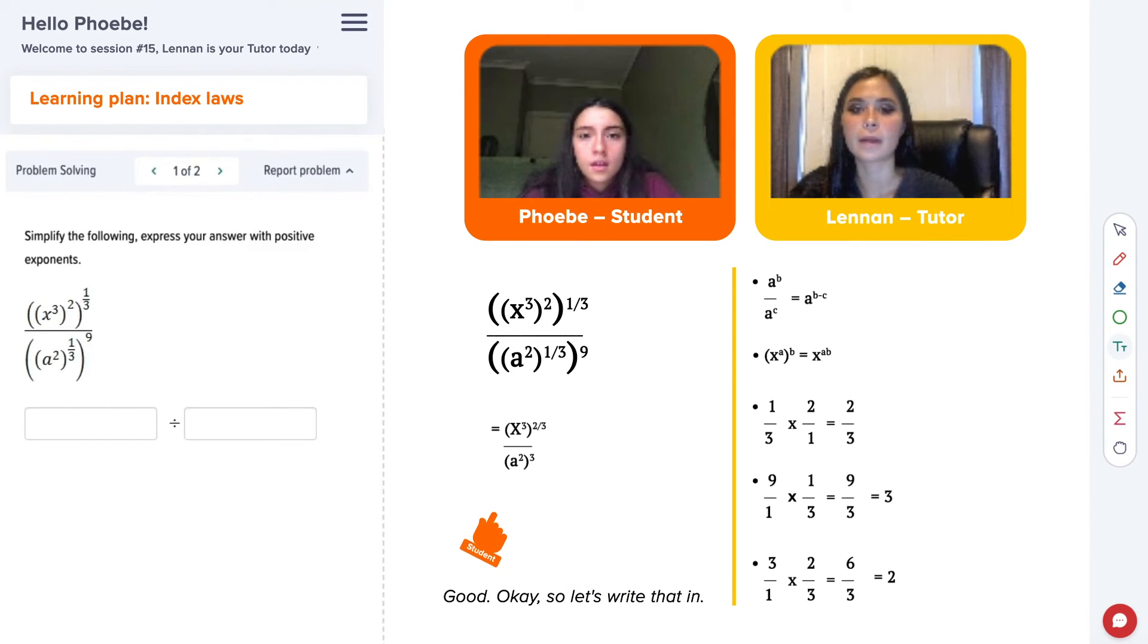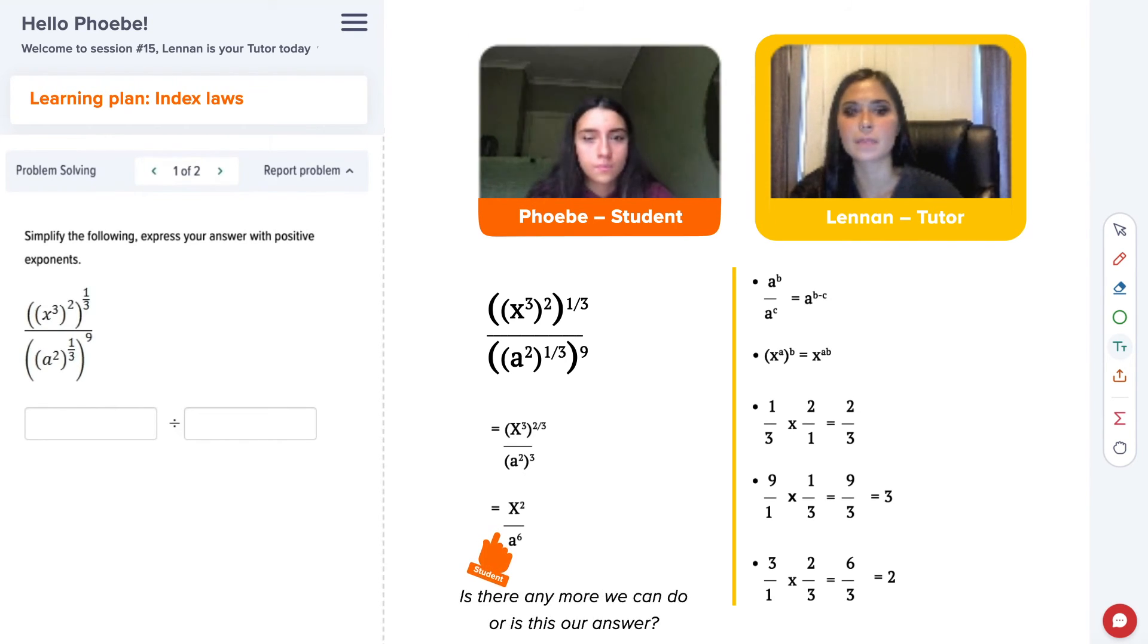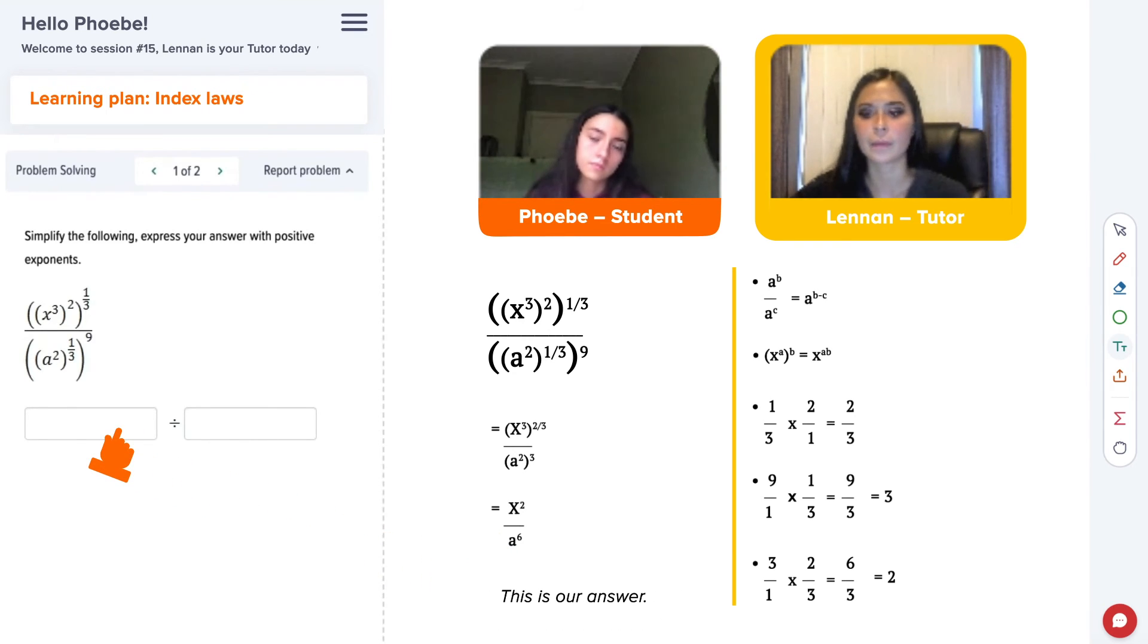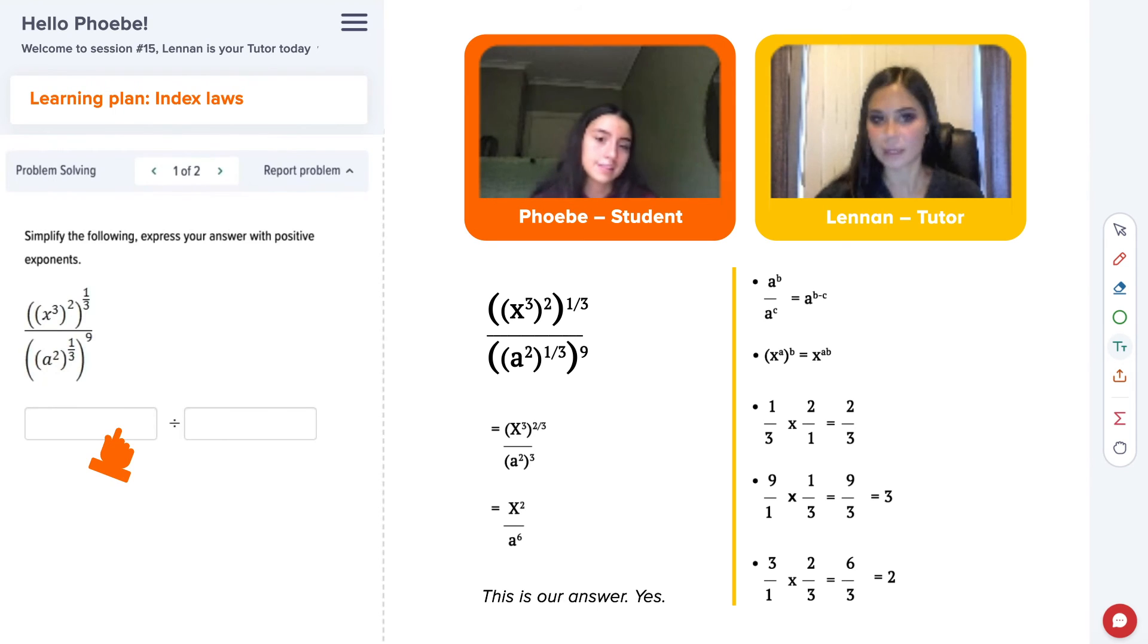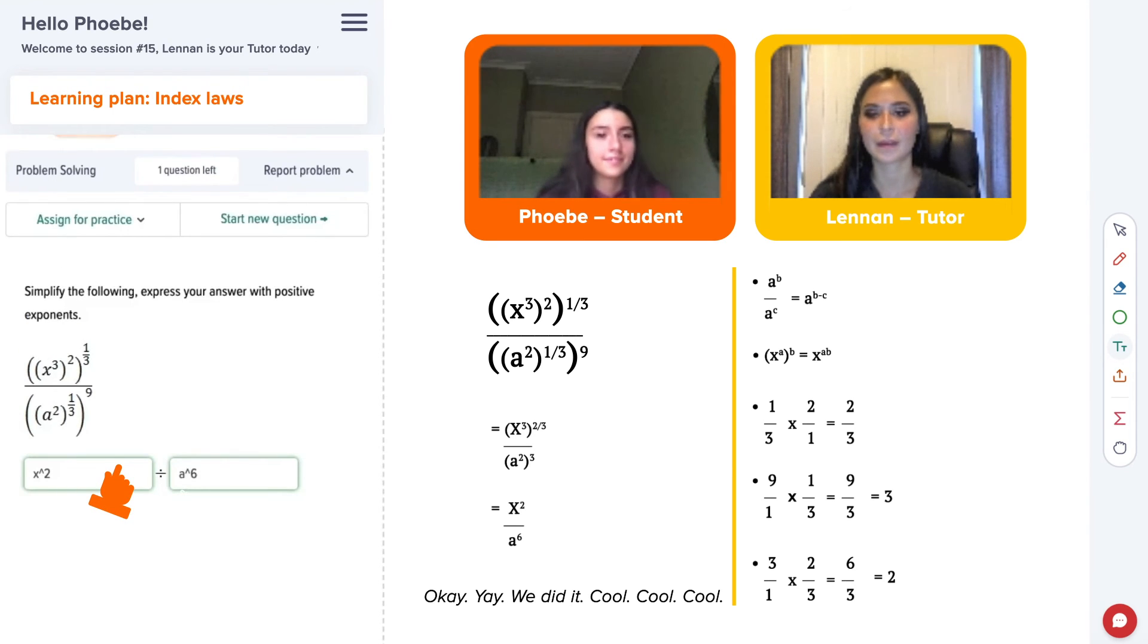Okay, so let's write that in. We have X to the power of two, as you said. Good. Let's do this one in our heads. Two, three times six. Yes. A to the C. Yes. All right, let's look over at the submission box. Is there any more we can do or is this our answer? This is our answer. Yes. Okay. Yay. Yeah, we did it. Cool.